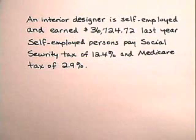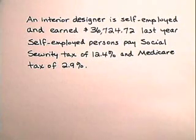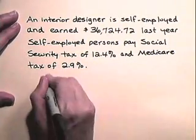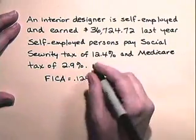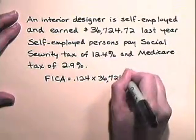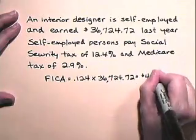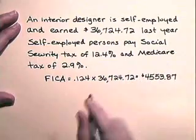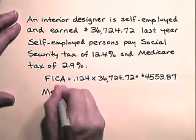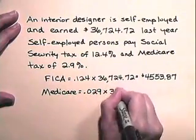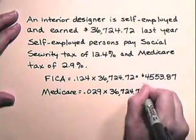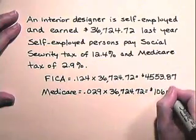Now let's find the FICA tax and Medicare tax for self-employed persons. An interior designer is self-employed and earned $36,724.72 last year. Self-employed persons pay Social Security tax of 12.4% and Medicare tax of 2.9%. The FICA (Social Security) tax is 12.4% (0.124) times $36,724.72, which is $4,553.87. And the Medicare tax is 2.9% (0.029) times $36,724.72, which is $1,065.02.